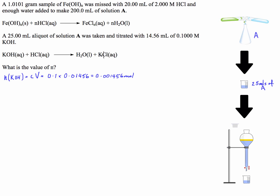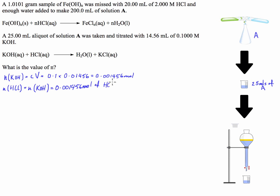From our equation, we can see that the number of moles of hydrochloric acid is going to be in the same ratio — the same quantity — as the number of moles of potassium hydroxide. So the moles of HCl in the 25 mL aliquot is also 0.001456 moles.